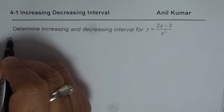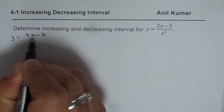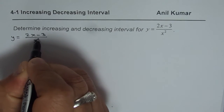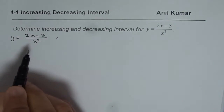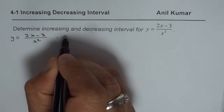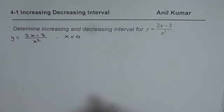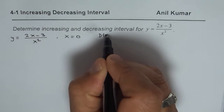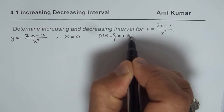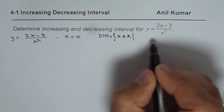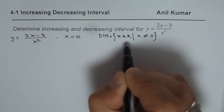We are given y equals 2x minus 3 divided by x squared. The denominator cannot be 0, so there is a discontinuity and we have a vertical asymptote at x equals 0. That means the domain of the function is x belongs to real numbers where x is not equal to 0.